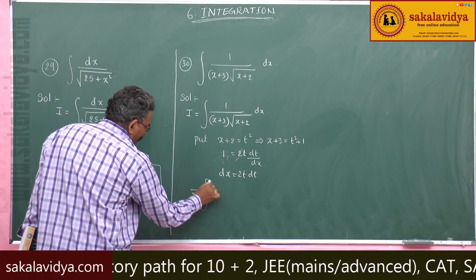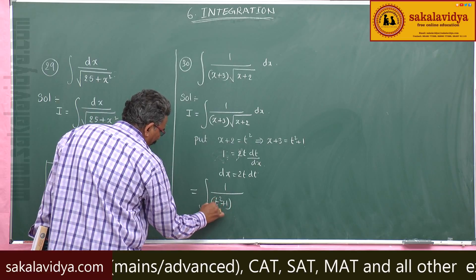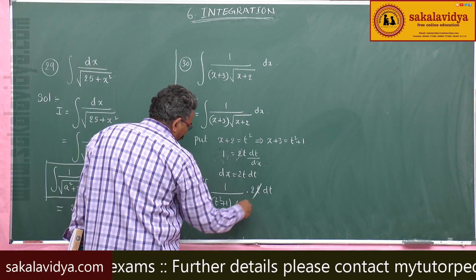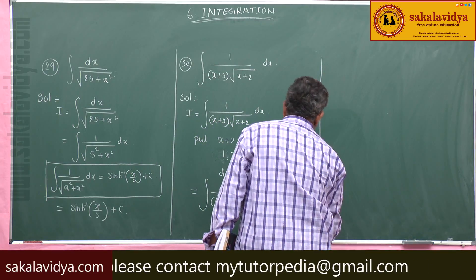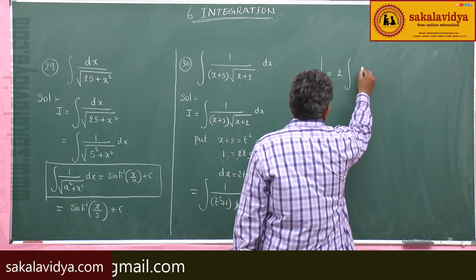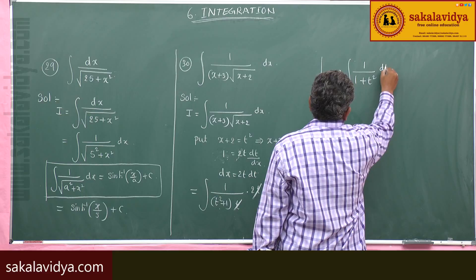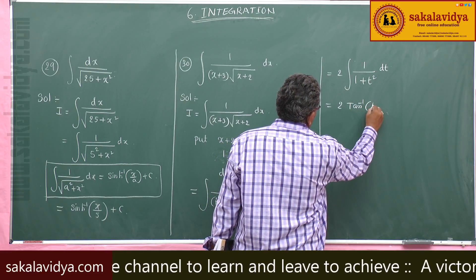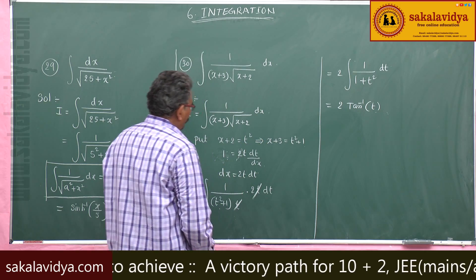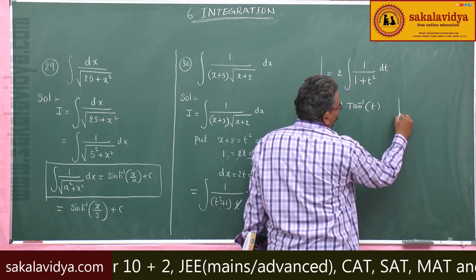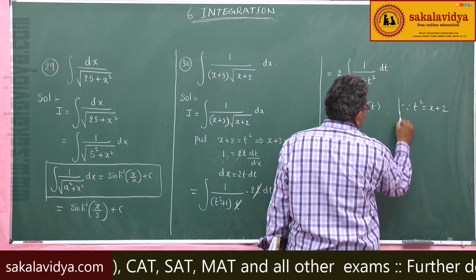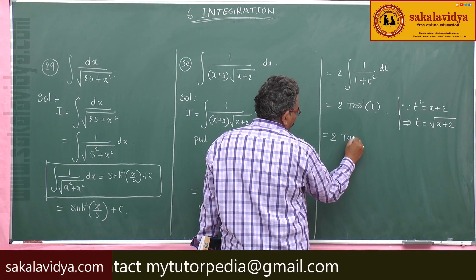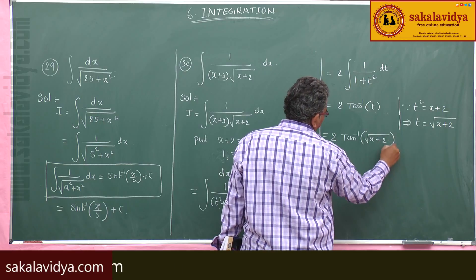Substituting in, the integral becomes integral of 1 / ((t² + 1) · t) · 2t dt. The t's cancel, giving 2 · integral of 1/(1 + t²) dt, which is a standard result. So we get 2·tan⁻¹(t) + C. Since t² = x + 2, we have t = √(x + 2). Therefore the answer is 2·tan⁻¹(√(x + 2)) + C.